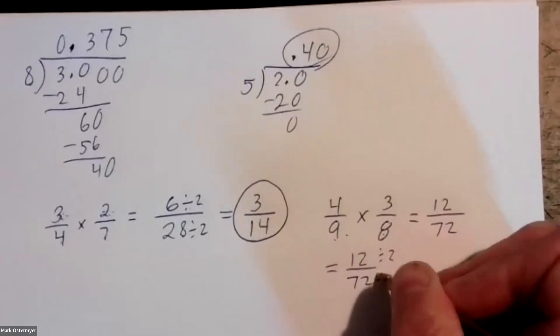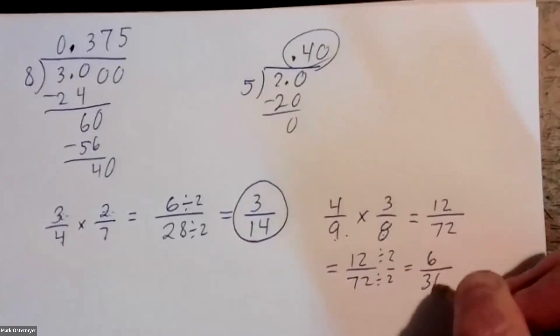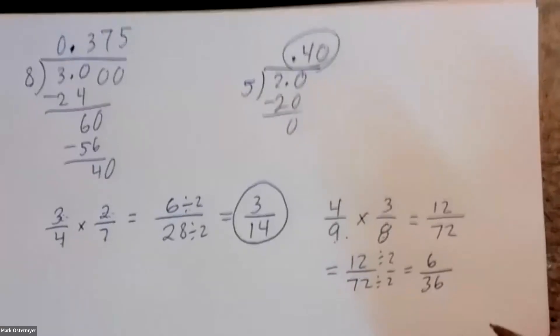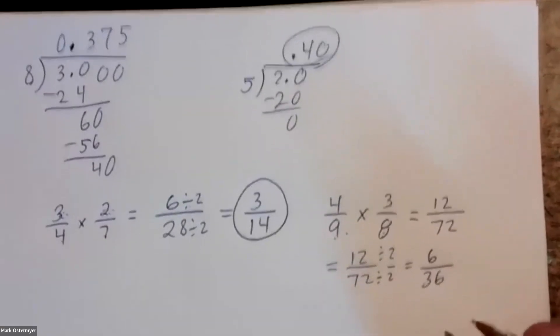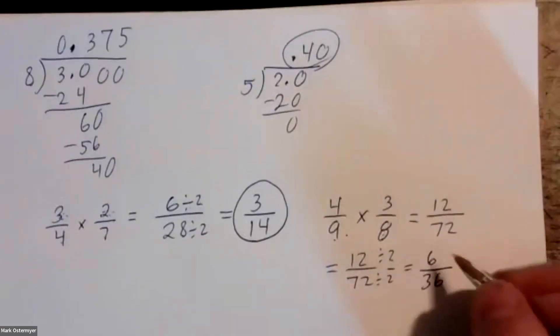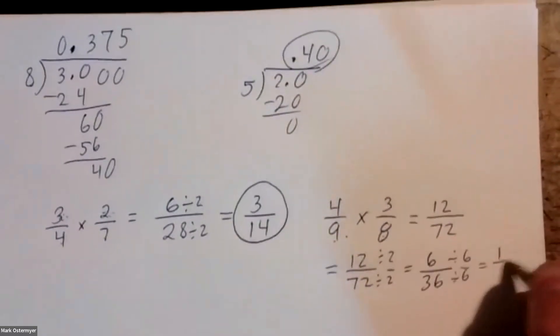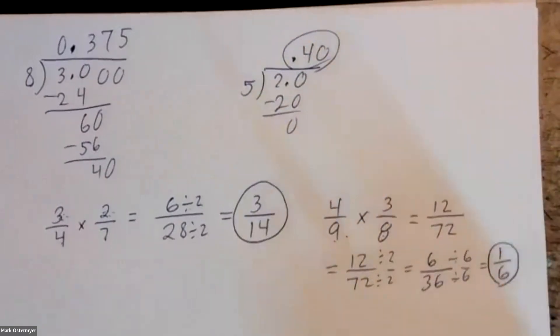...down by two to six over thirty-six. Can we reduce this further? By six — we can reduce this down to one over six. Yes, that's your answer.